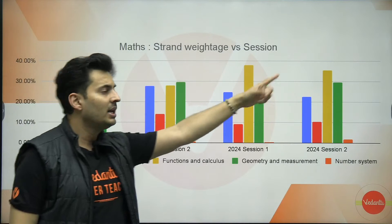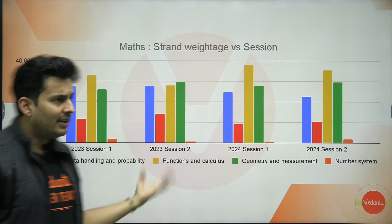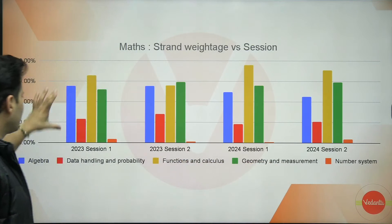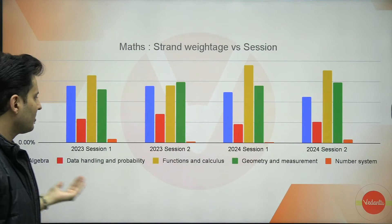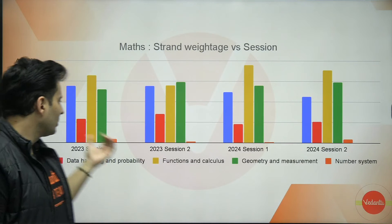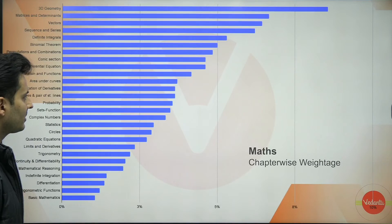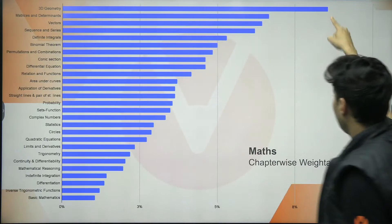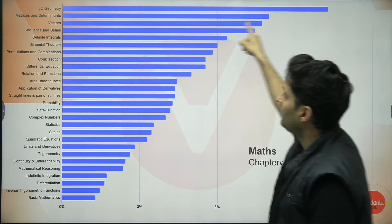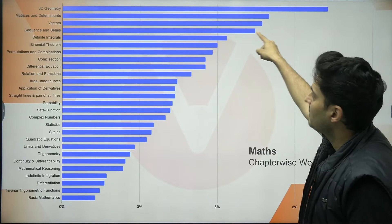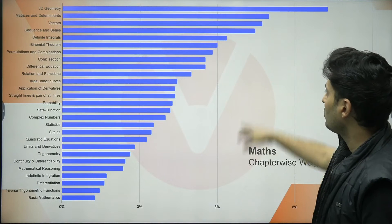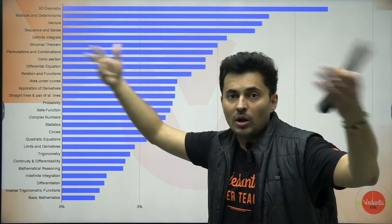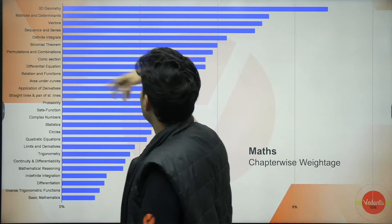Looking at which units have the highest weightage: functions and calculus is the highest weightage unit, very important. The second highest are algebra and geometry and measurement — these consistently rank highly across most sessions. The least weightage goes to number systems, data handling, and probability. At the chapter level, 3D geometry is close to 9%, matrices close to 7-8%, vectors close to 7%, sequence and series close to 6%, and definite integrals close to 5-6%. These are absolutely critical — if you cover just these chapters, you are already 30-40% there.